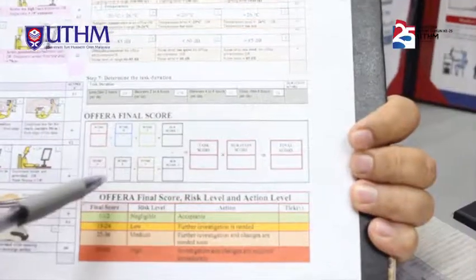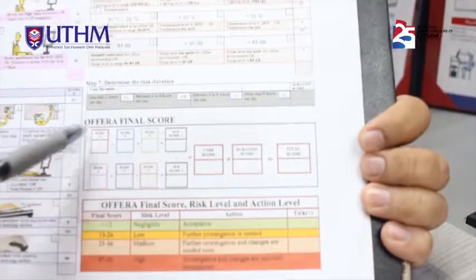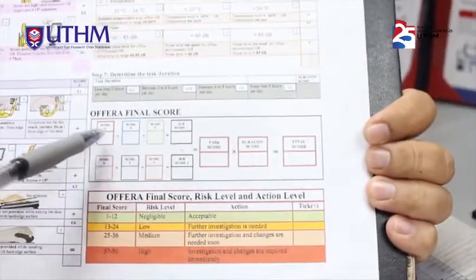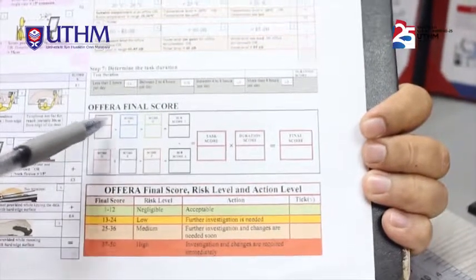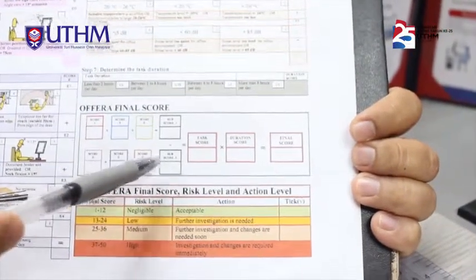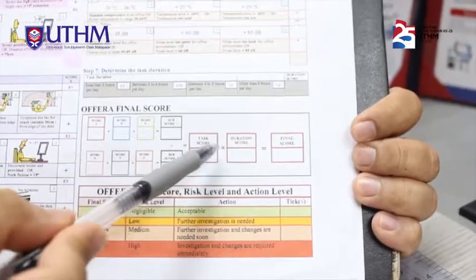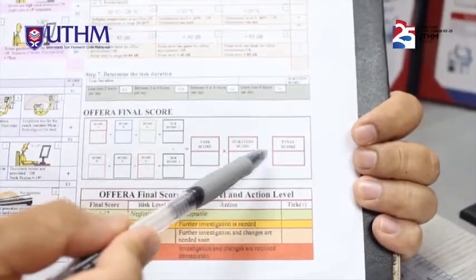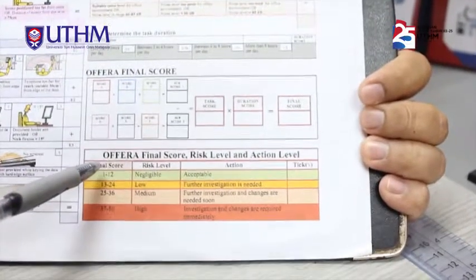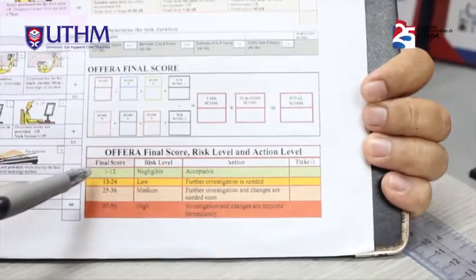The novelty of the Ophira method is that it is easy and quick to use, requiring only pen and paper techniques, and it focuses on the main office components related to office job tasks. It has a scoring system and action levels which indicate the level of risk for each job task, and it has been tested for reliability and validity during the documentation process.